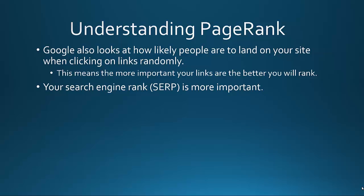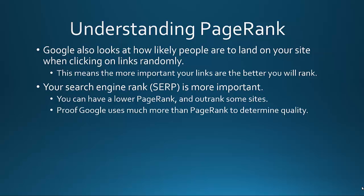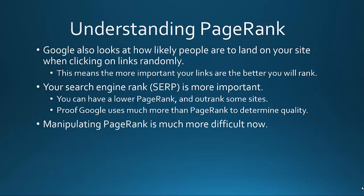Your search engine rank — SERP, as it's oftentimes referred to — is more important overall. You can have a lower PageRank and actually outrank some sites. That happens often, where you have a PageRank of maybe 1 and outrank a site with a PageRank of 3 or 4, because Google has many other factors beyond just PageRank. This is also proof that there are more factors at play.